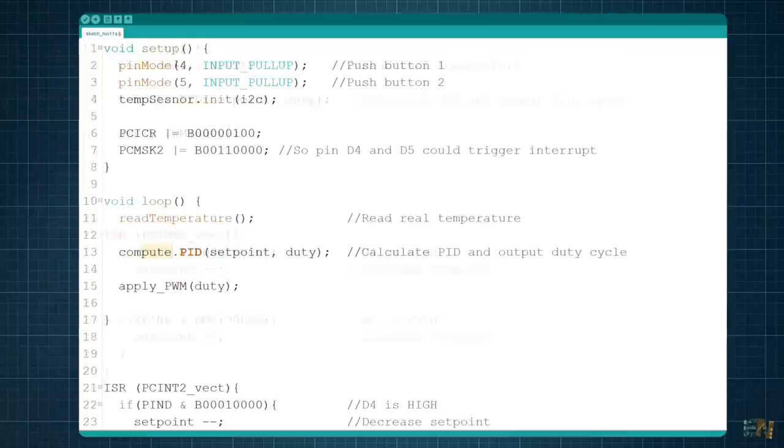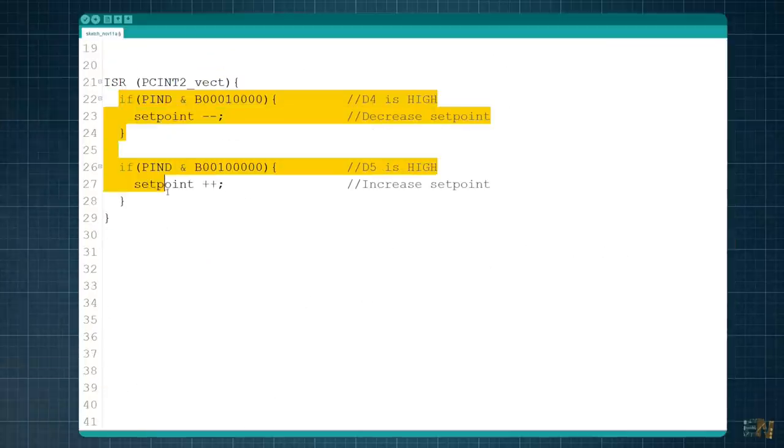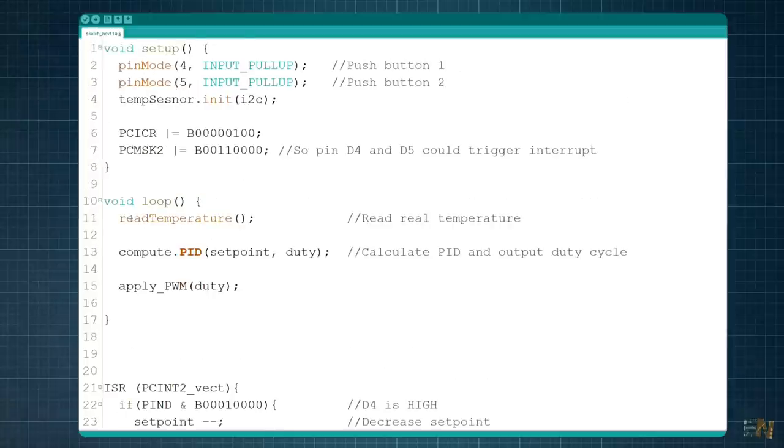So now, for sure, each time that I press a button, we will go to the ISR routine and read the digital value of the buttons. We exit the ISR and get back to the rest of the code.